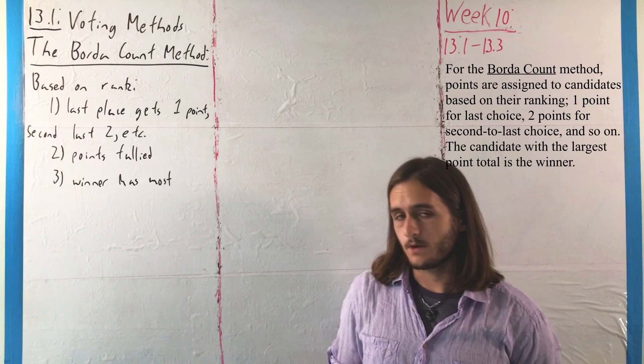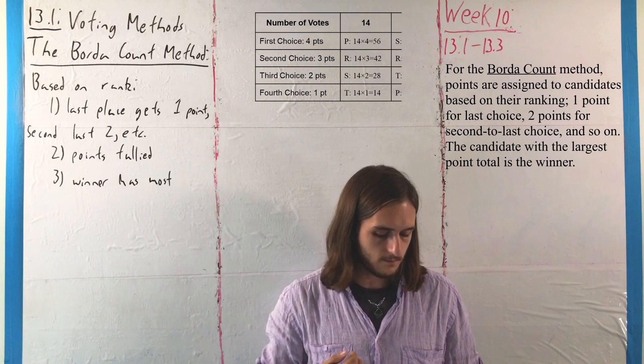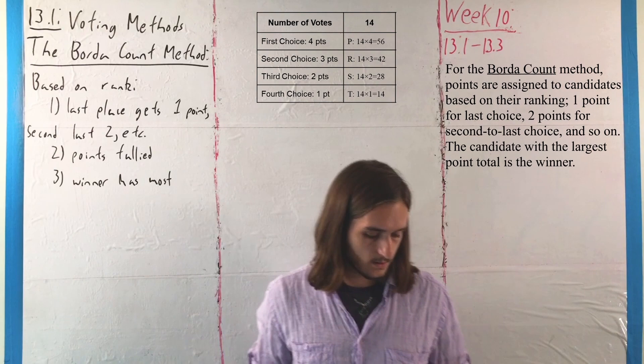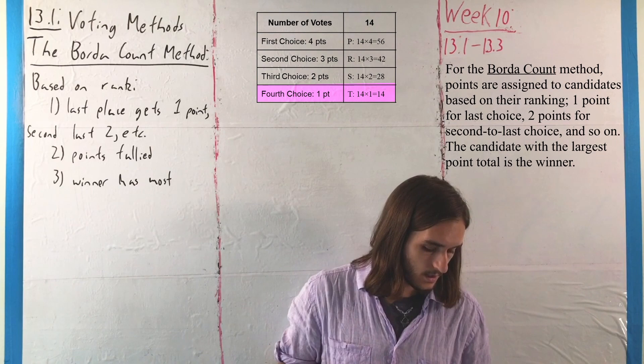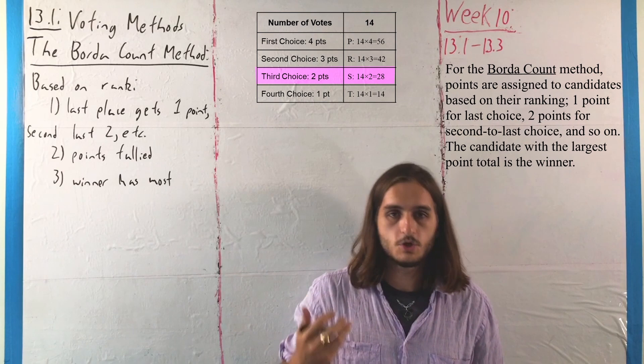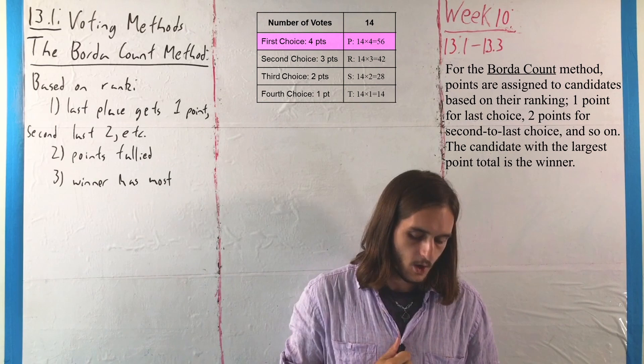Going back to that trip preference table, we can score it using Borda Count. Taking the 14 votes that had Paris, Rome, St. Petersburg, and Tallinn in that order, and because there are four options, Tallinn would get 1 × 14 = 14 points for being last on those 14 ballots. St. Petersburg, being third choice (second from last), would get 2 × 14 = 28 points. Rome would get 3 × 14 = 42 points, and Paris would get 4 × 14 = 56 total points.